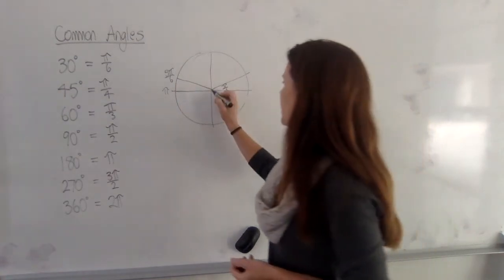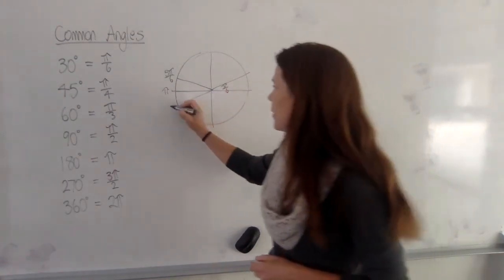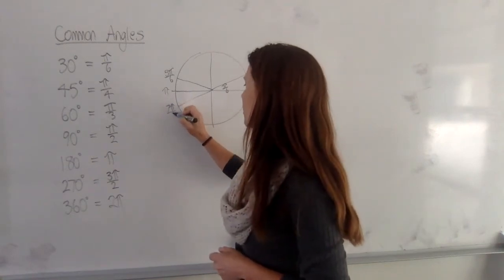Down here, if we have 1 pi plus 1 sixth of a pi, we have 7 pi on 6.